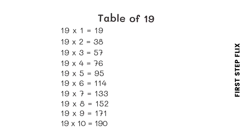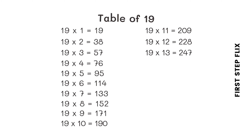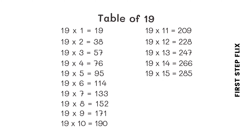19 nines are 171. 19 tens are 190. 19 elevens are 209. 19 twelves are 228. 19 thirteens are 247. 19 fourteens are 266. 19 fifteens are 285. 19 sixteens are 304. 19 seventeens are 323.